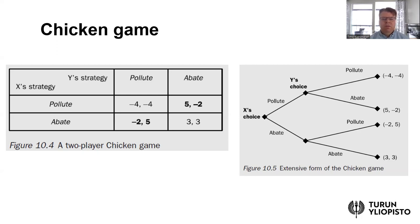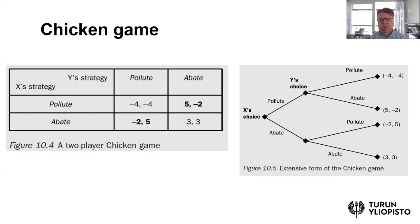We can also think of this in the form of a sequential game. The game can be played so that both countries make their moves simultaneously, or it can be played as a sequential game. The tree structure on the right illustrates how we can think about a sequential game. Suppose that country X can make the first move — country X chooses whether to pollute or abate. Then country Y observes the choice of X and makes its own choice.